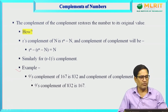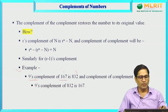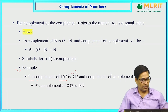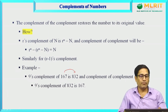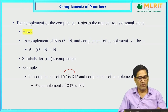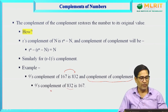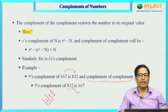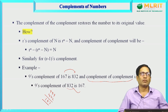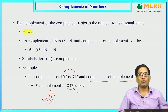A numerical demonstration: the 9's complement of 167 is 832 (subtracting each digit from 9). Taking the 9's complement of 832: 999 − 832 = 167, which is the original number. This proves that the complement of the complement restores the original value.